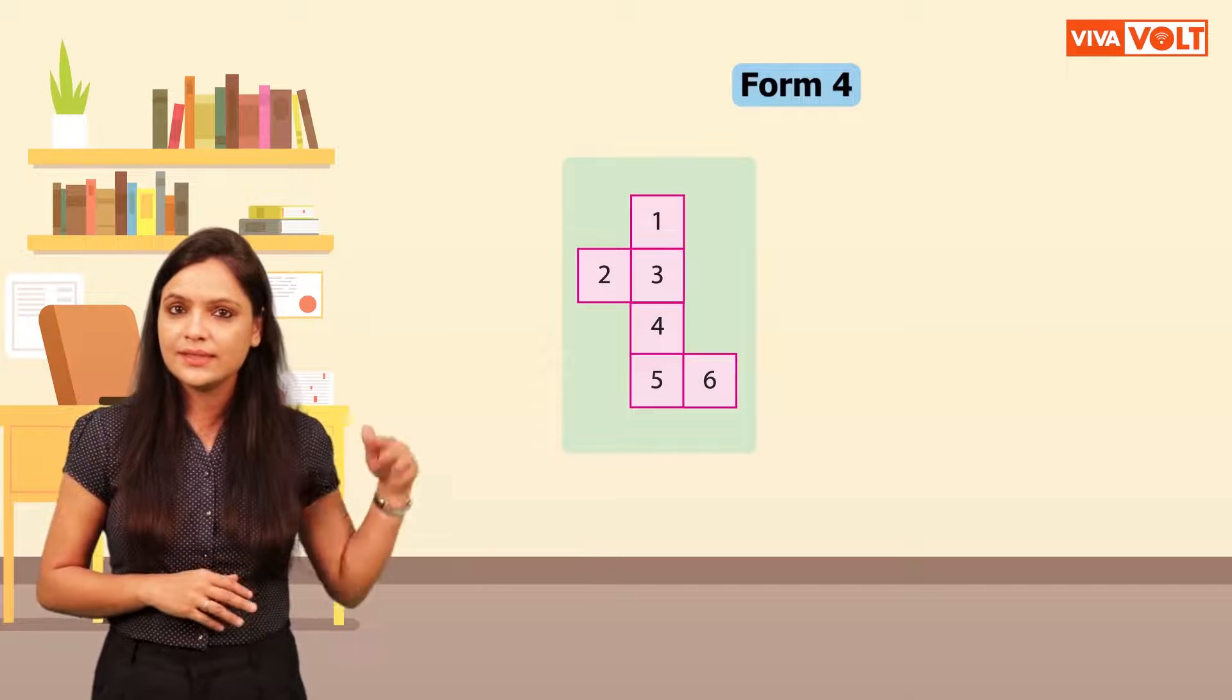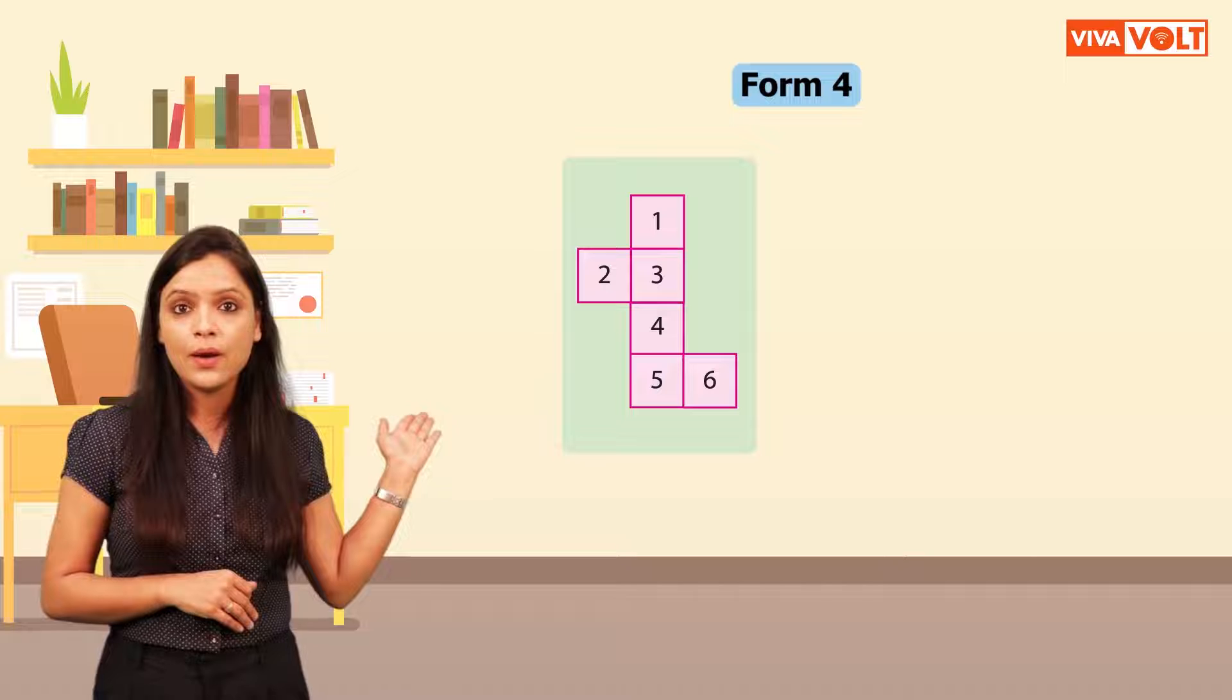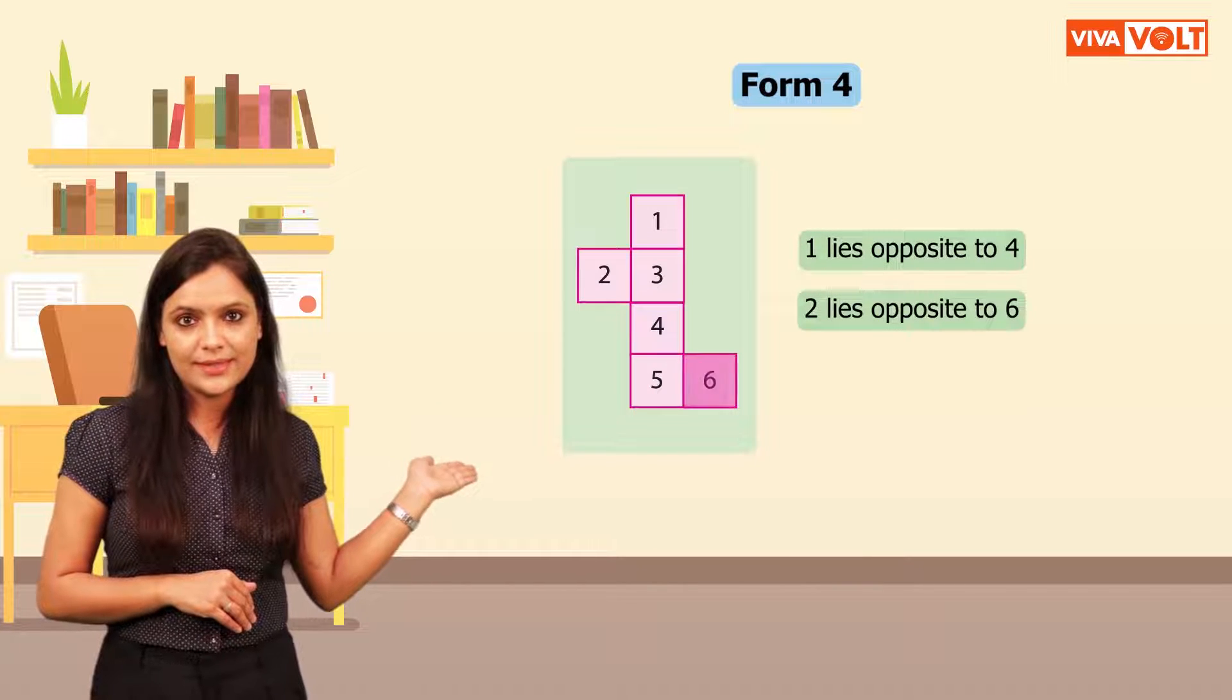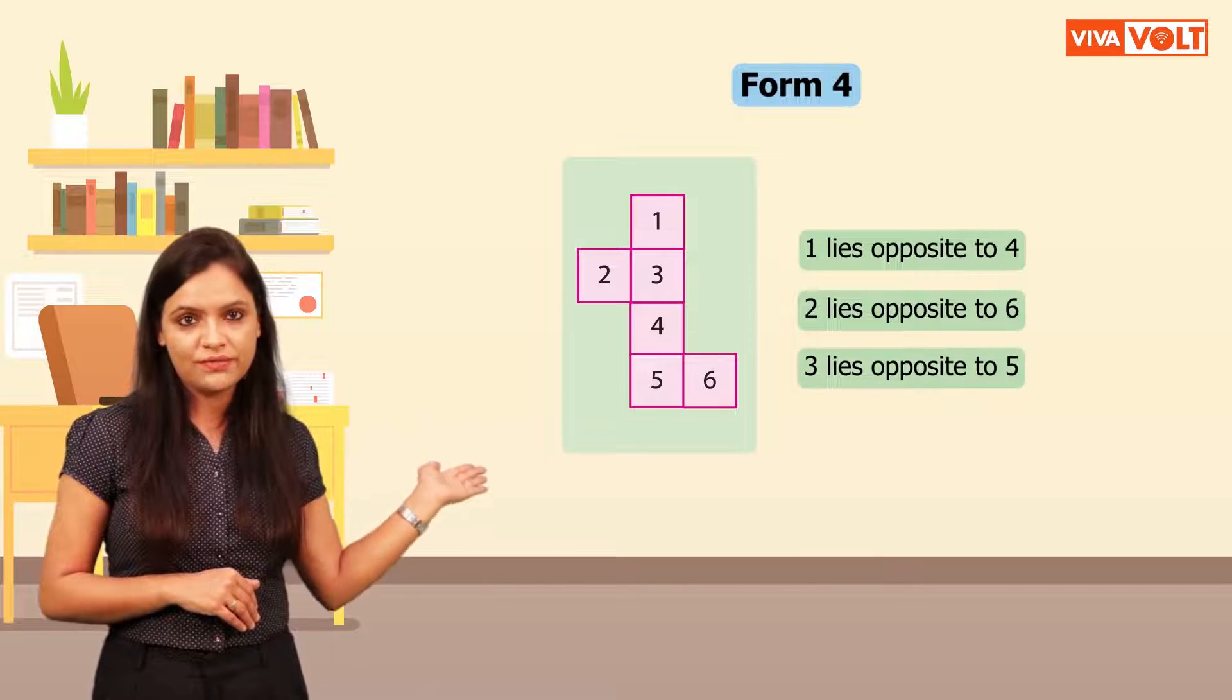Now, this is form 4. In this case, 1 lies opposite to 4, 2 lies opposite to 6, 3 lies opposite to 5.